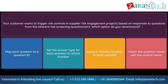Question. Your customer wants to trigger risk controls in supplier risk engagement projects based on responses to questions from the inherent risk screening questionnaire. Which option do you recommend? Option 1: Map each question to a question ID. Option 2: Set the answer type for each question to whole number. Option 3: Apply a visibility condition to each question. Option 4: Match the question name with the control name.